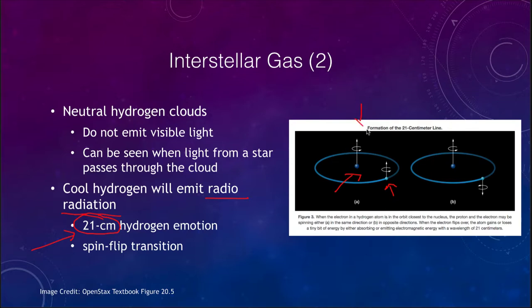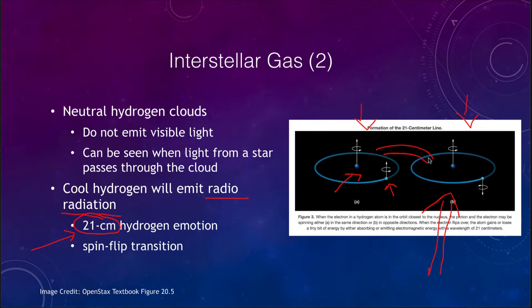In one state, both the proton and electron are spinning counterclockwise; in the other, one is spinning clockwise and one counterclockwise. The antiparallel state is the stable, lowest-energy state that the atom wants to be in. If the atom gets excited a little, those spins can become aligned. When the atom transitions from the parallel spin state back to the antiparallel state — what we call the spin-flip transition — it gives off a wavelength of 21 centimeters, much as changing energy levels in hydrogen gives off specific wavelengths.